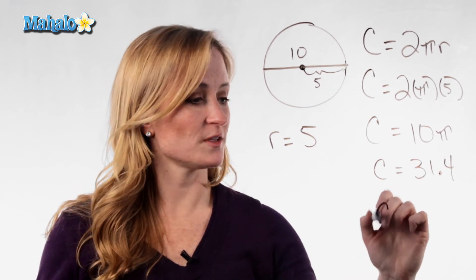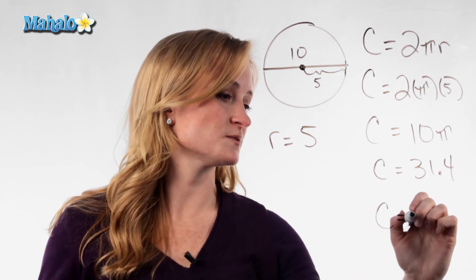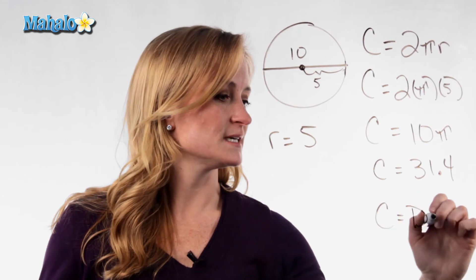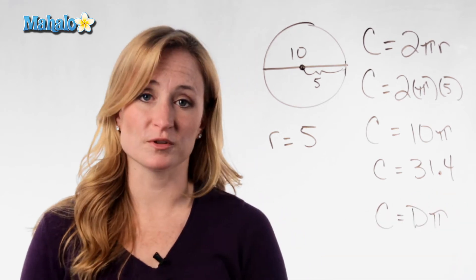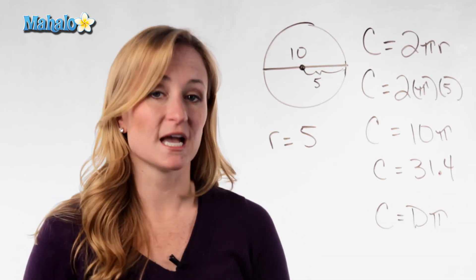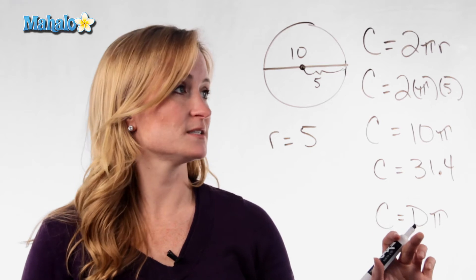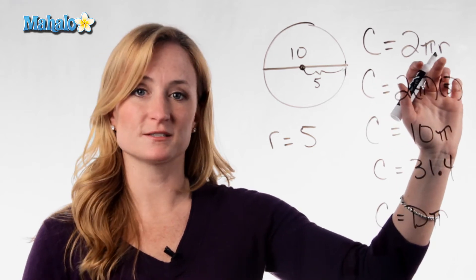It's also important to know that if you're looking up formulas, you may also see C equals D times pi as another formula for circumference, and that's because the diameter is twice the radius.